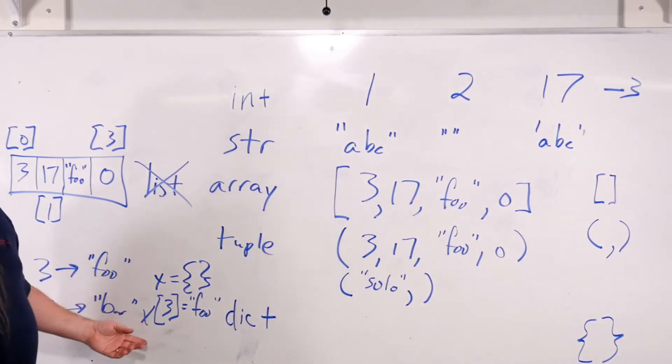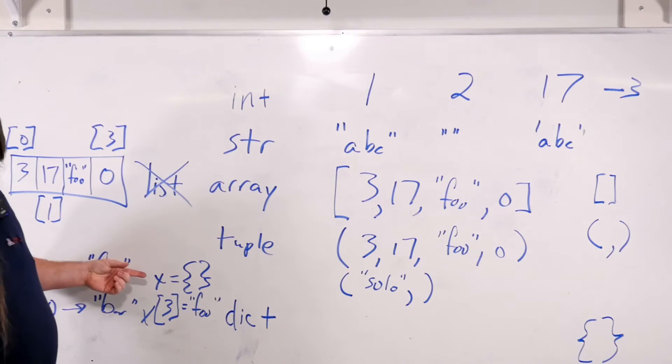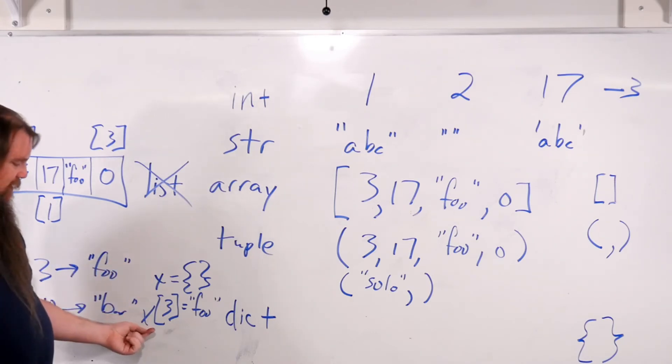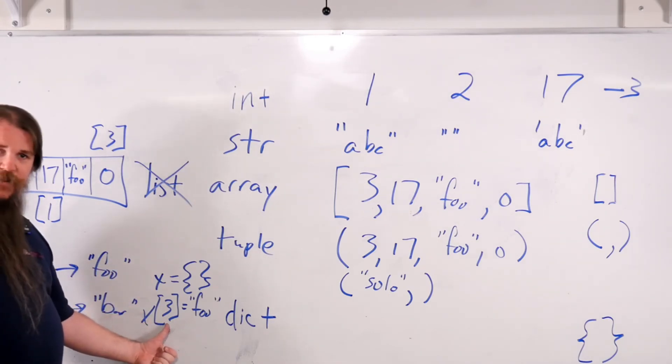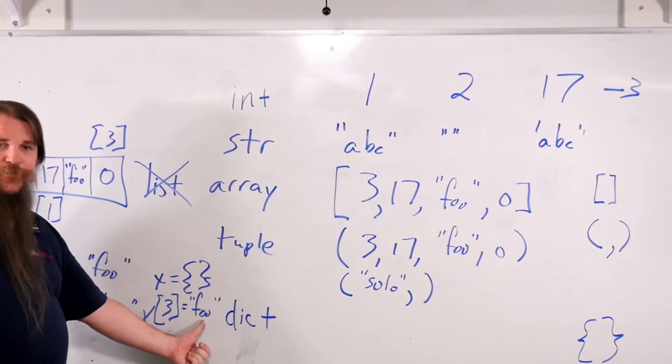So this is saying, I apologize that we're filling up the board here a little bit, but this says x is an empty array. Then this says, map the key three to the value foo.